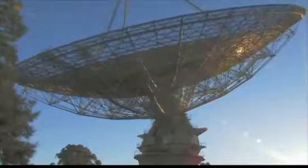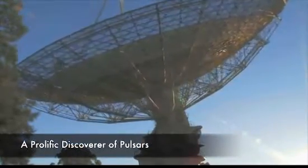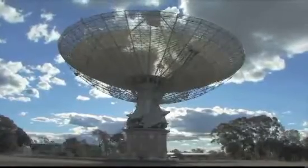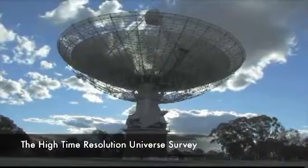The Parkes telescope is in New South Wales in Australia and is the prolific discoverer of special stars astronomers called pulsars. In November 2008 we started a very large survey of the southern sky looking for pulsars.